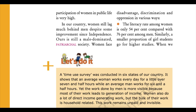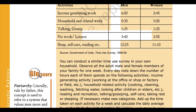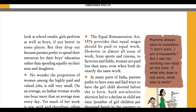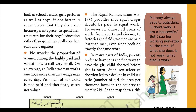The literacy rate among women is only 54% compared with 76% among men. A smaller proportion of girl students go for higher studies. When we look at school results, girls perform as well as boys, if not better in some places. But they drop out because parents prefer to spend their resources on their boys' education. The proportion of women among highly paid and valued jobs is still very small. On an average, an Indian woman works one hour more than an average man every day, yet much of her work is not paid and therefore often not valued. The Equal Remuneration Act 1976 provides that equal wages should be paid for equal work. However, in almost all areas of work — from sports and cinema to factories and fields — women are paid less than men, even when both do exactly the same work.